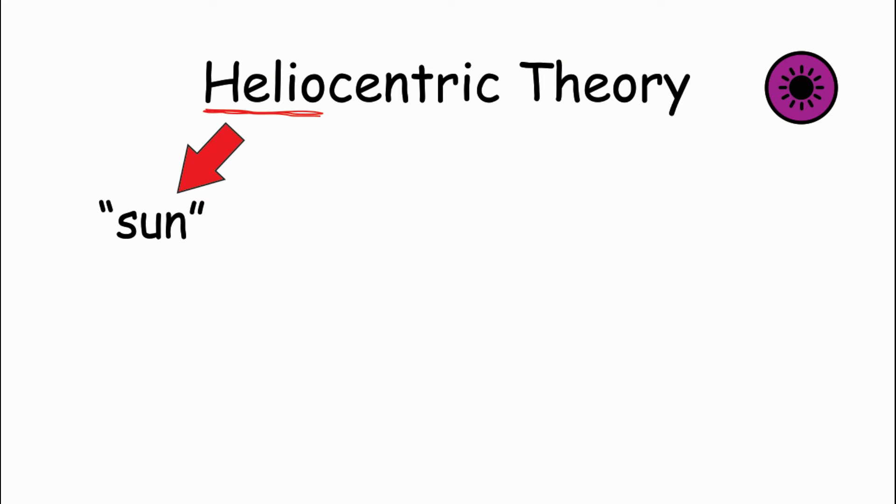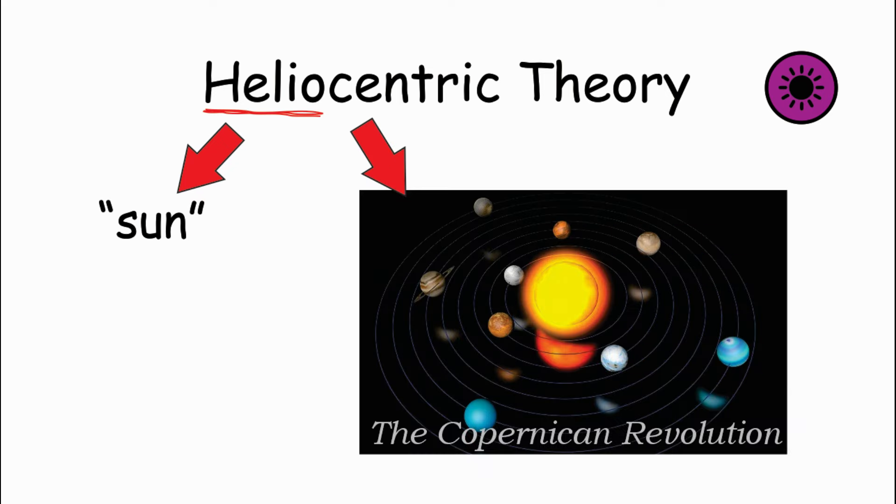So it is the idea that the sun is actually at the center of our solar system, while all the planets including Earth orbit it.